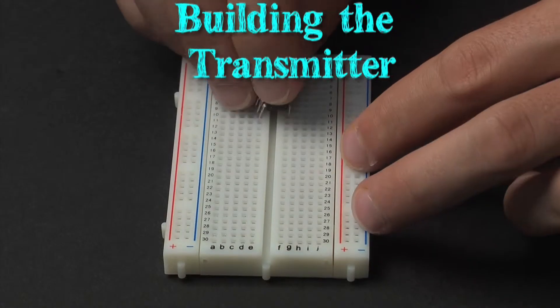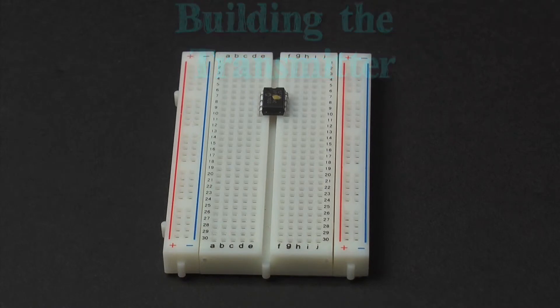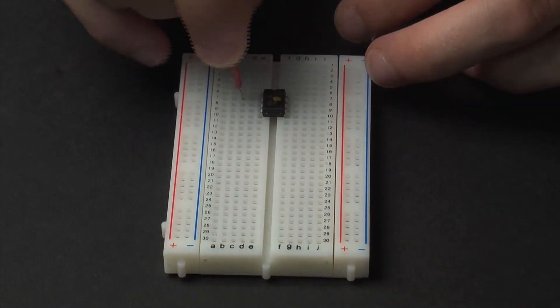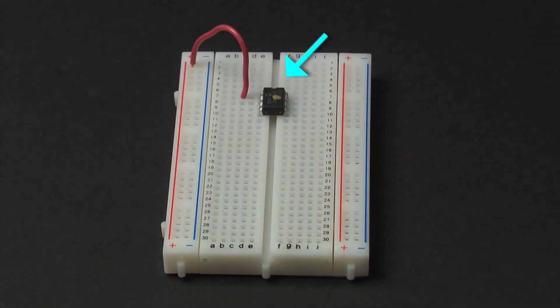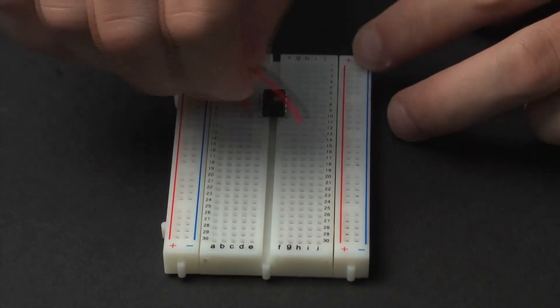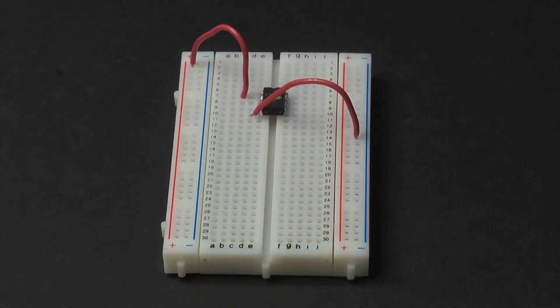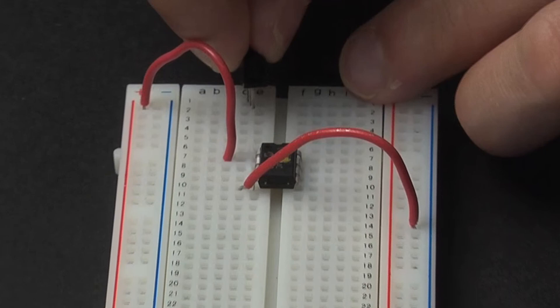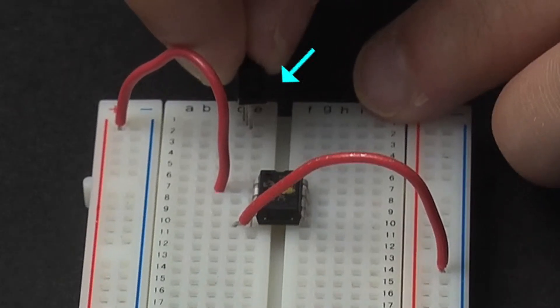After you finish building the receiver, build the transmitter and begin by making sure the encoder is added on the breadboard with the notch facing upward. When inserting the slide switches, make sure you know which pins each of the three terminals are entering.